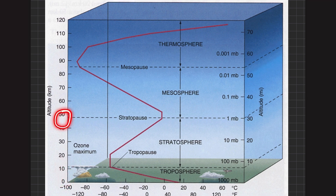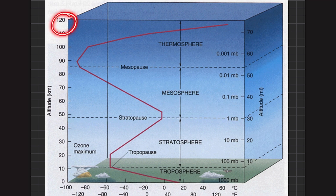From 10 to almost 50 kilometers is the second layer, called the stratosphere. From 50 to 85 kilometers is the next layer, called the mesosphere. From 85 to almost 120 kilometers above Earth is the thermosphere. These are the main layers of the atmosphere, and above the thermosphere is the exosphere.